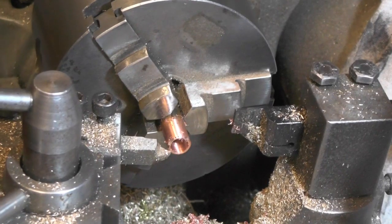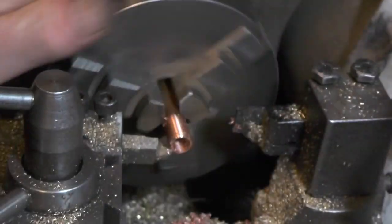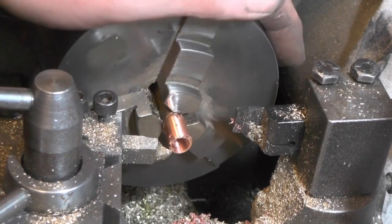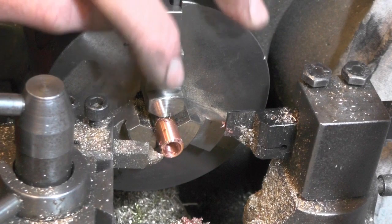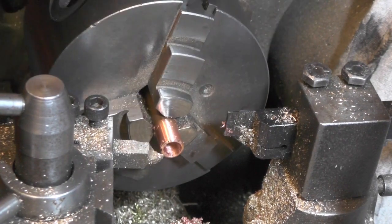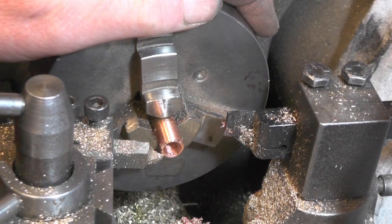I've put this copper tube into the lathe and I'm not doing any turning to it as such. All I'm doing is putting a chamfer on and then parting it off once I've put the thread on.